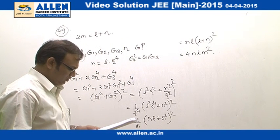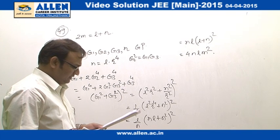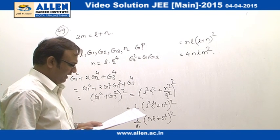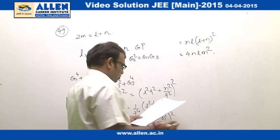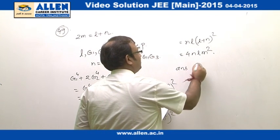So we have to now just check the option. So if we check the option, option number 4 is correct because that is 4LM square N which is the same. So correct answer is option number 4.